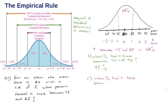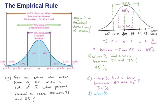What percent had a score between 80 and 85? Now we're looking from the center out one standard deviation, but only in one direction. Since one full standard deviation on both sides gives 68%, we can cut that in half. So going from 80 to 85 gives us about 34%.